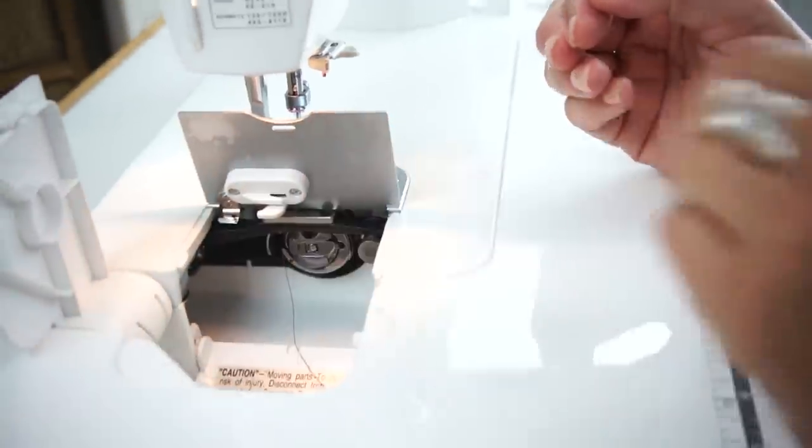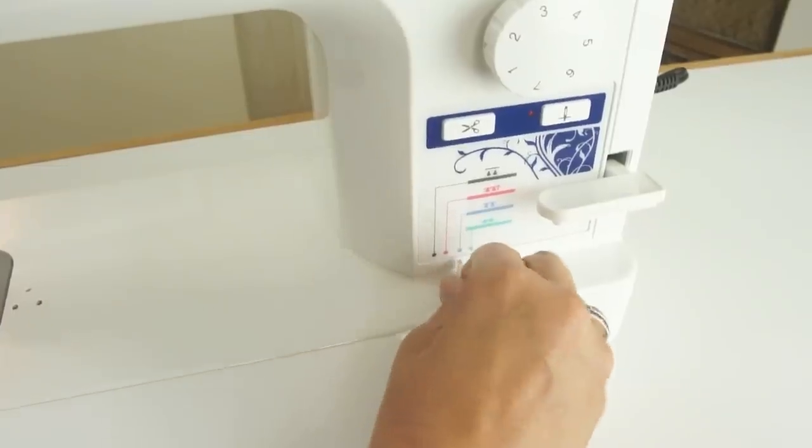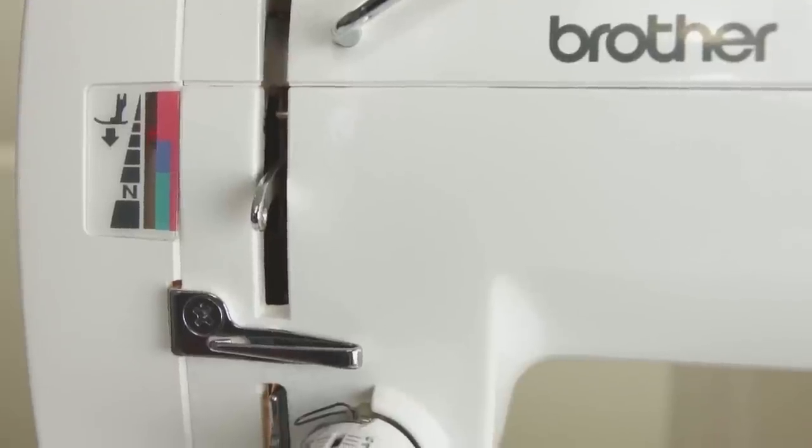Loading the bobbin and threading the machine is easy, plus the DZ1500F includes a convenient color-coded thread pressure dial for consistent, high-quality stitching.